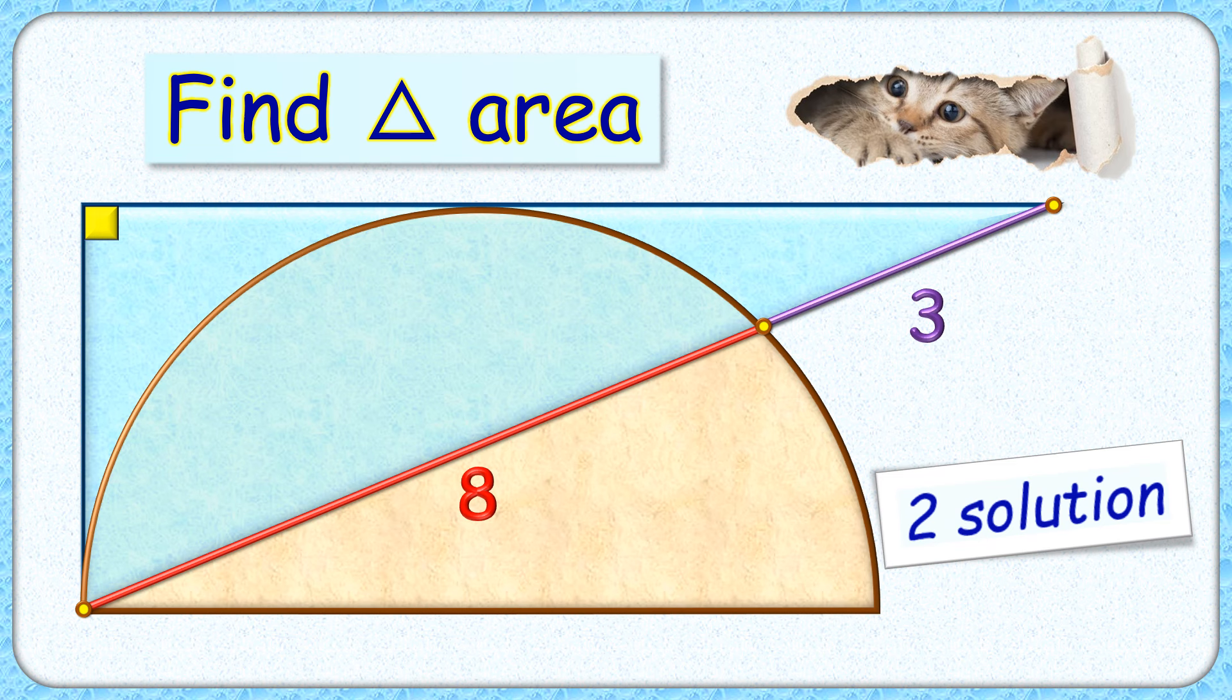Welcome everyone. This interesting question given to us is a right angle triangle and a semicircle. Two of the sides of this triangle are tangent to the semicircle. The hypotenuse length is given as 8 plus 3 cm. The exciting part is with this limited data, we have to find the area of this triangle.